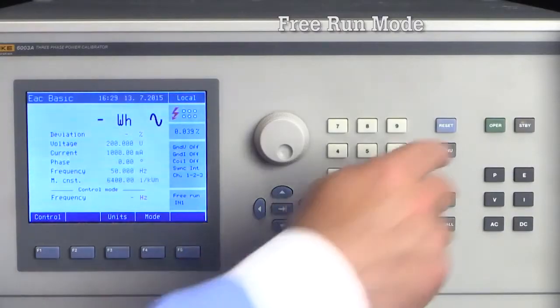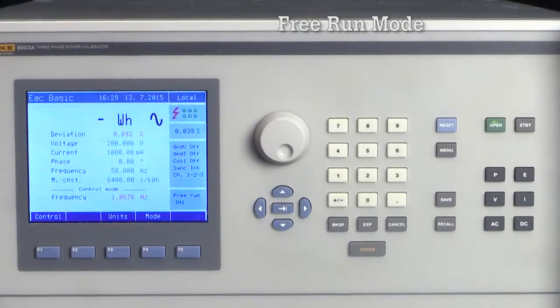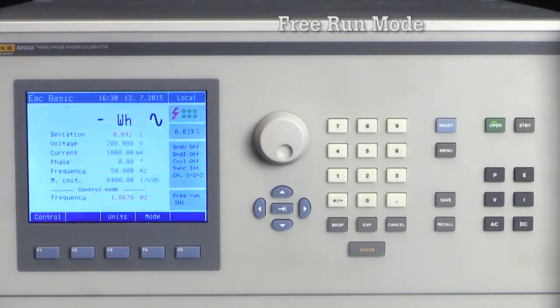To start the test, I will push operate and the test starts. The 6003A outputs 200 volts 1 amp into the UUT. In other words, it delivers 200 watts to the meter. The 6003A receives the pulses back from the meter and, based on the meter constant, expects an exact frequency of the pulses. The 6003A continuously shows the deviation between the measured frequency and expected frequency as a percentage.